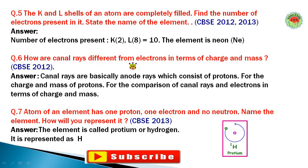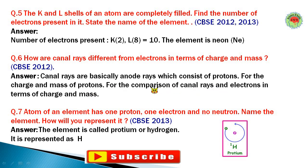Question number six: How are canal rays different from electrons in terms of charge and mass? Canal rays are positively charged rays — basically anode rays — which consist of protons. This is the comparison of canal rays and electrons in terms of charge and mass.